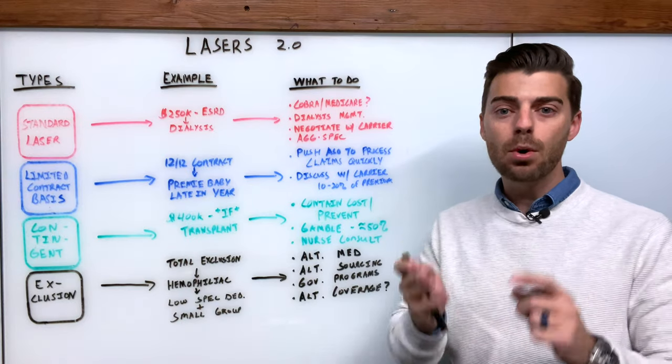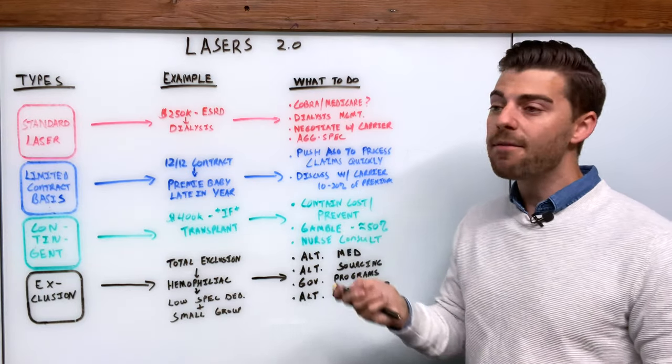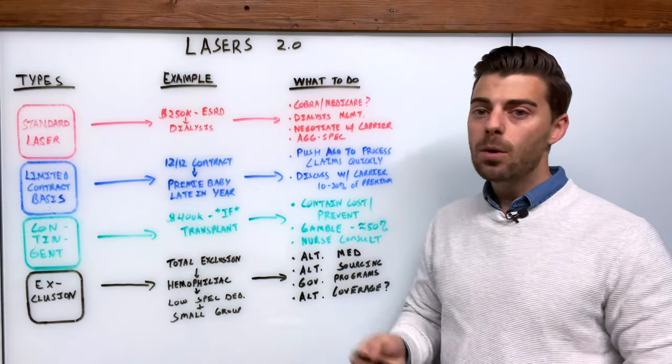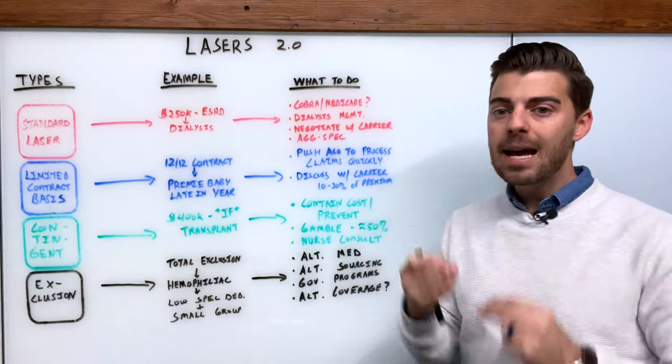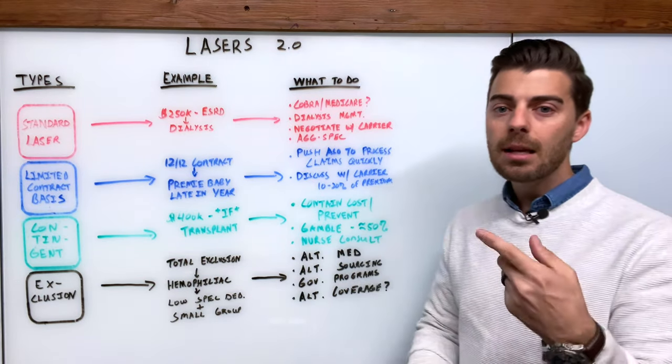You could always negotiate with the carrier. Let's say you have a hundred and fifty K spec and they're adding a two hundred fifty thousand dollar laser. Well maybe there's enough room in that case for them to offset it, lower that laser, or maybe there's even enough room to potentially eliminate it all together.